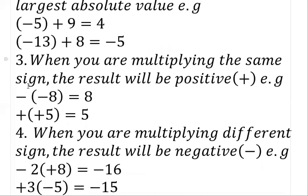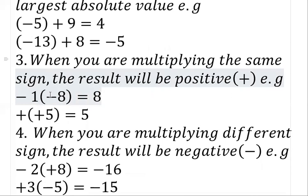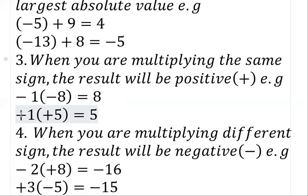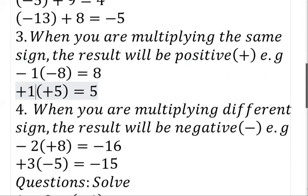Rule number three: when you are multiplying the same sign, the result will be positive. For example, minus one times minus eight — you are having the same sign, so the result will be plus. One times eight gives you eight, so the answer is positive eight. Also, positive one times positive five gives you five, and the sign is plus. So once you are multiplying numbers with the same sign — minus times minus or plus times plus — your result will be plus.